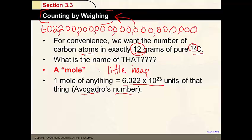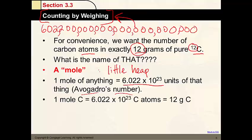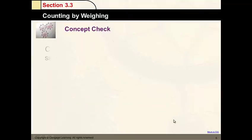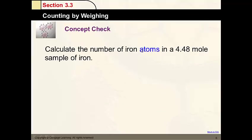This is the number of atoms it would take to give us 12 grams of carbon-12. We use this number all the time, always written in scientific notation. So 1 mole of carbon equals Avogadro's number of atoms, which if we weigh it is 12 grams. This applies to all other elements — instead of having a mass of 12, you'd look at the periodic table. We're going to do an example with iron.